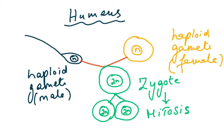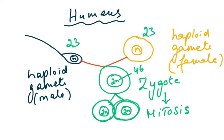In every human being there are reproductive organs where gametes are formed. A male gamete and female gamete fuse to form one cell — the zygote. The gametes have the haploid number (n) of chromosomes: 23 each, because we have 23 pairs. At fertilization the zygote is formed with 2n = 46 chromosomes. This zygote then divides by mitosis, and every daughter cell has the same genetic information on those 46 chromosomes.